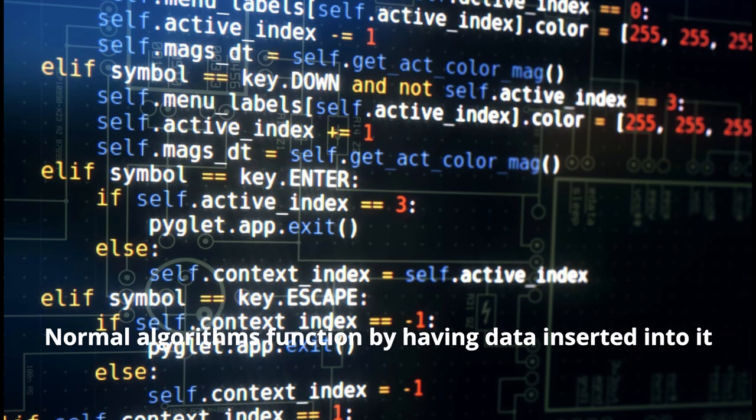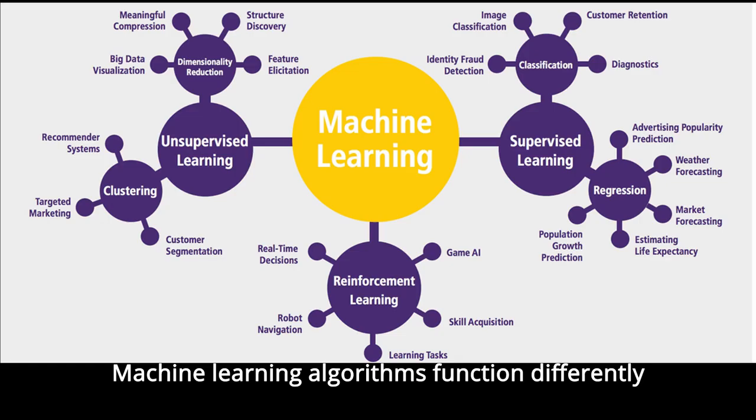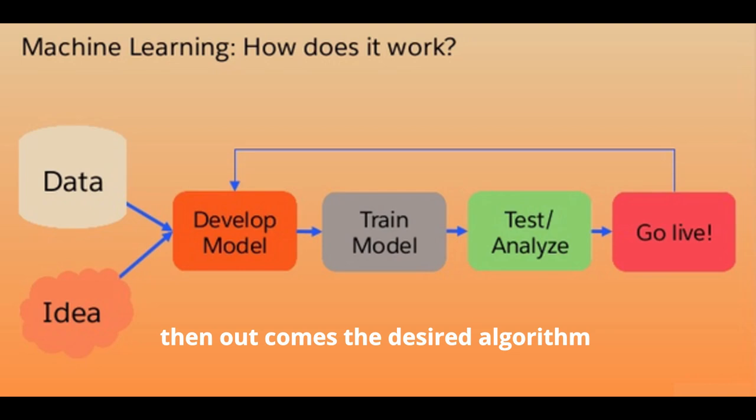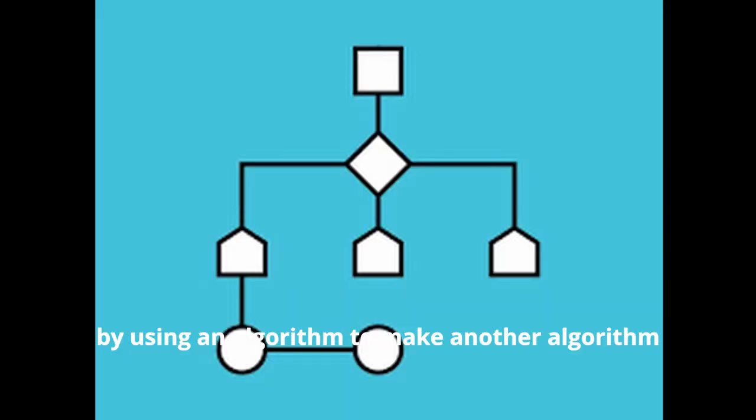Normal algorithms function by having data inserted into it that produces the result. Machine learning algorithms function differently. They function by having the data and the desired results fed into it, and then out comes the desired algorithm. In essence, it flips the traditional method on its head by using algorithms to make another algorithm.